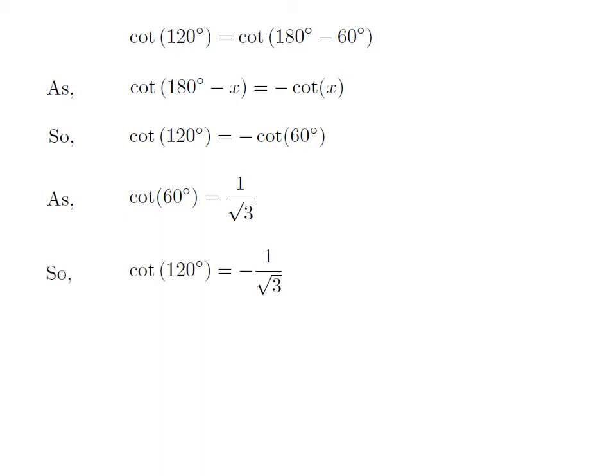So cotangent of 120 degrees is equal to minus 1 upon square root of 3.